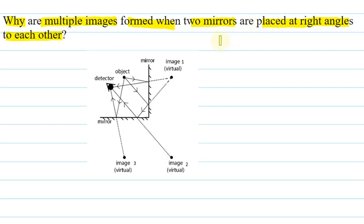Let us see the answer for this question. This is the ray diagram for the above question. Here are two mirrors at right angles. This is the object position. These three different images are the multiple images formed.